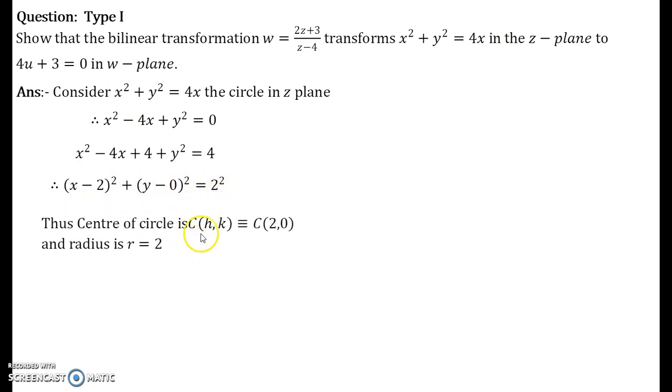We use the information that the center is (2,0) and the radius is 2. In z-plane this is written as |z - center| = radius. So this is |z-2| = 2.